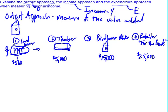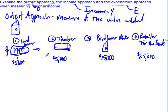You can see that as we go through the process, value has been added at each individual level. For the output approach, we don't just add up all the numbers — $500 plus $5,000 plus $15,000 plus $25,000. The timber company started with $500 worth of wood and produced $5,000 worth of two-by-fours, so they added $4,500 of value.